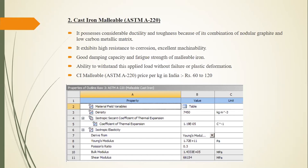The cost of malleable cast iron varies from 60 to 120 rupees per kg in India. Its material properties are: density 7450 kg/m³, and Young's modulus 1.75×10¹¹ Pa.